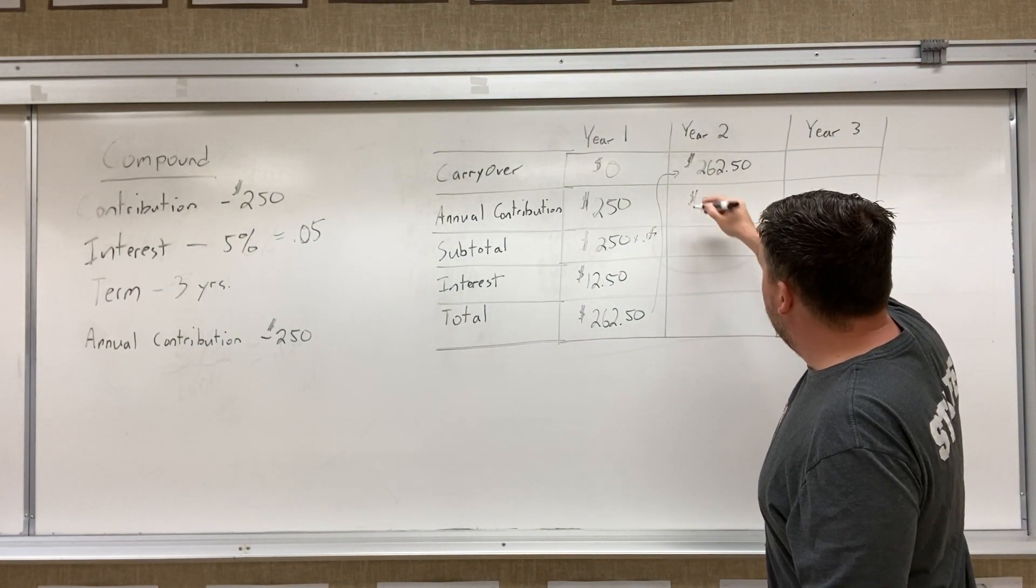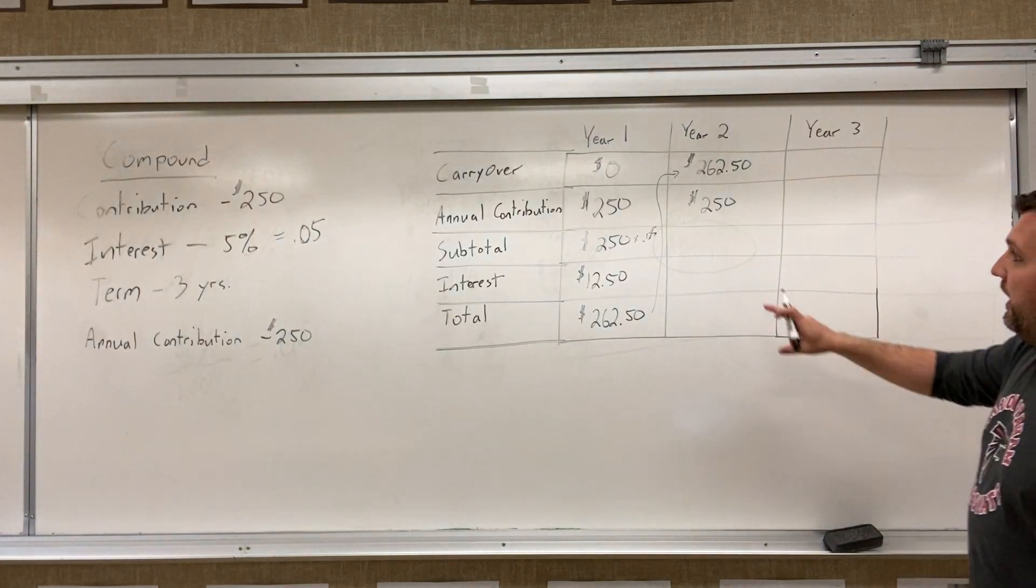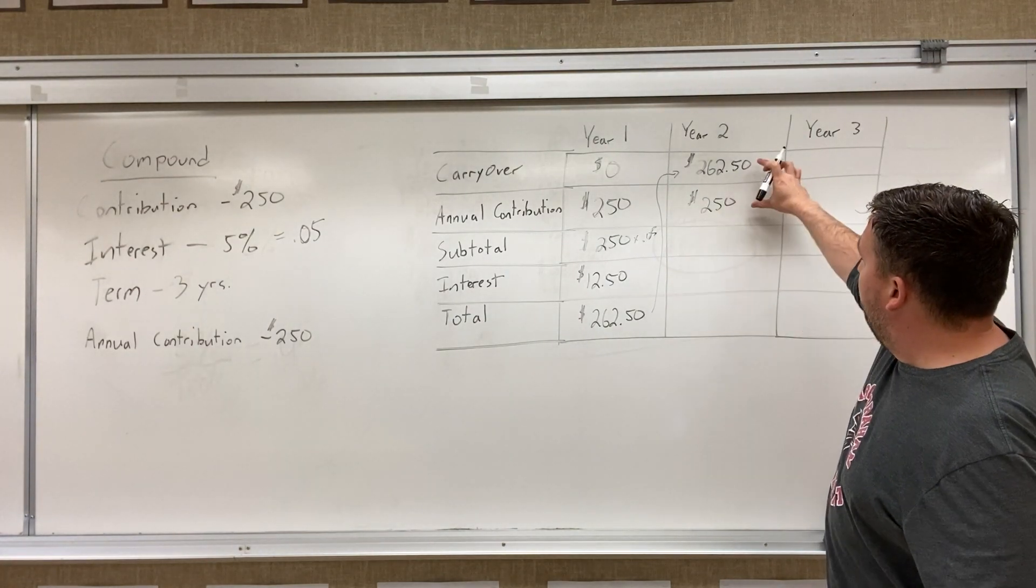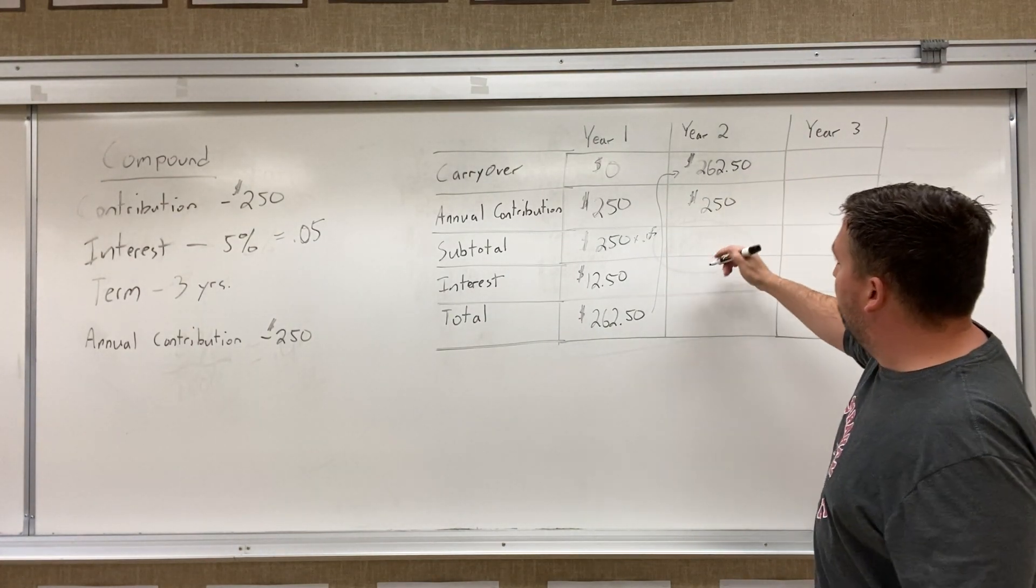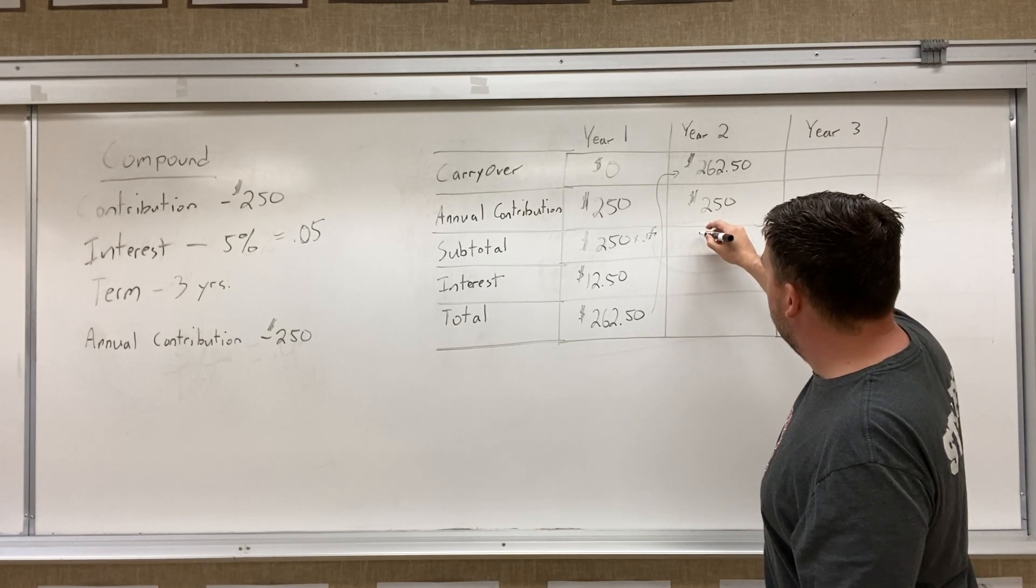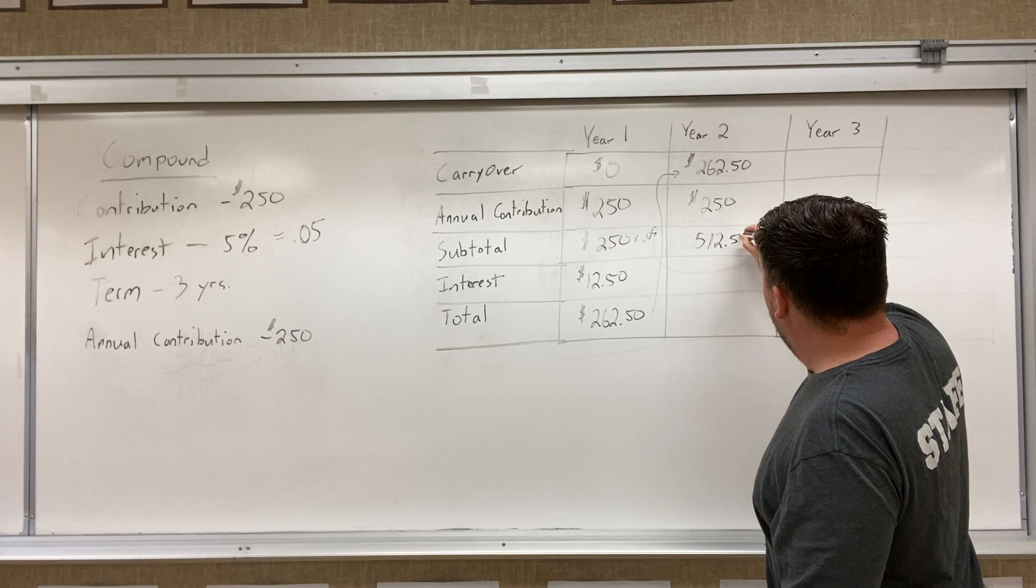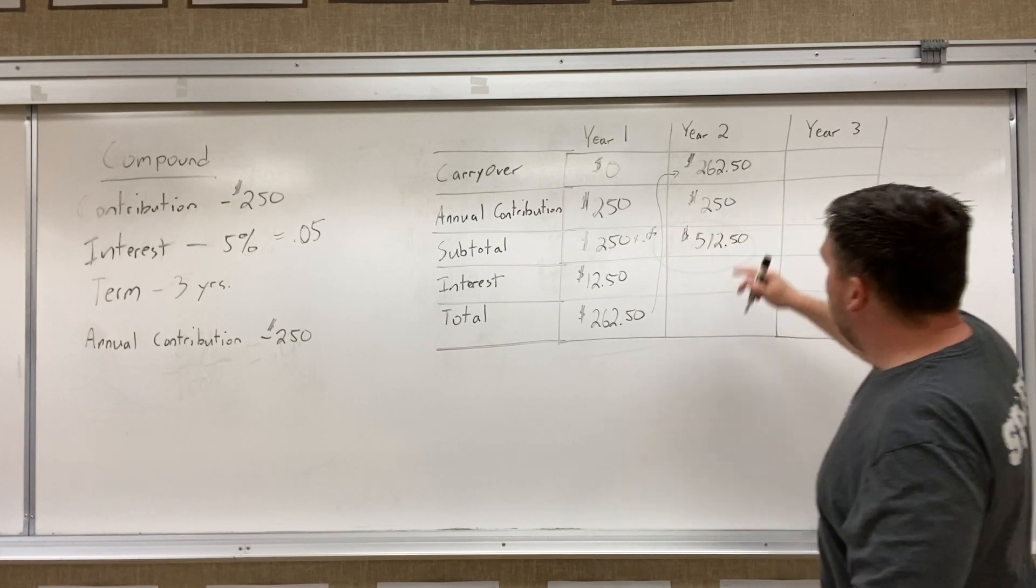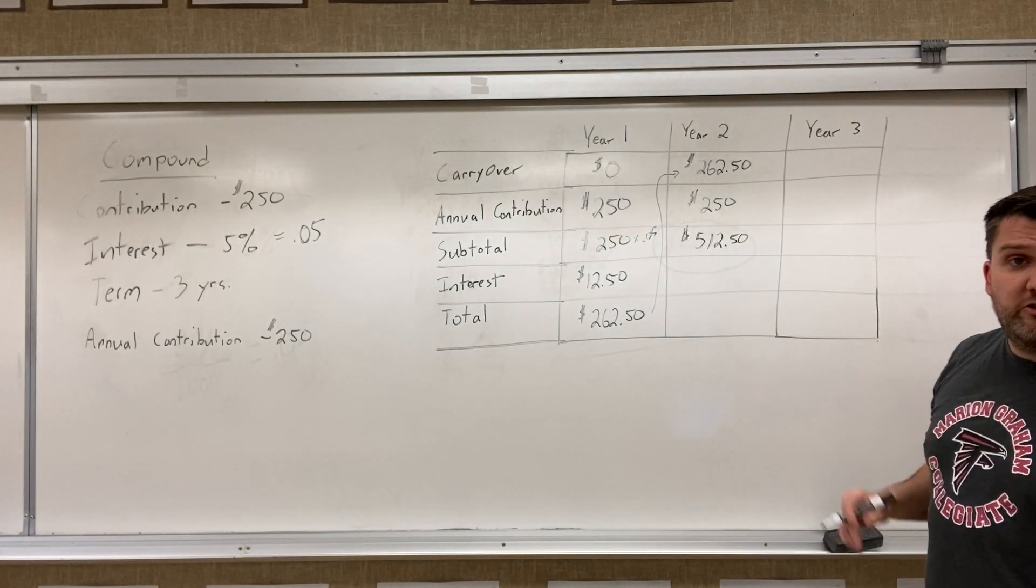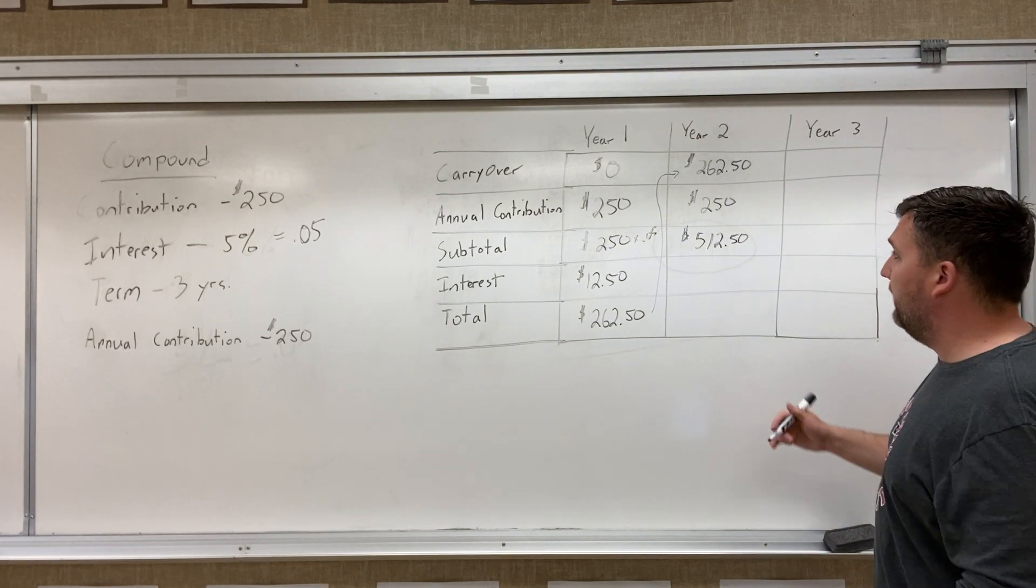So we're gonna add some more money into this bank account. And at the end, now we're gonna have, these two amounts are gonna add together. So before we get interest applied to it, we're gonna have $512.50 that's sitting in our bank account before the interest gets applied for the year.